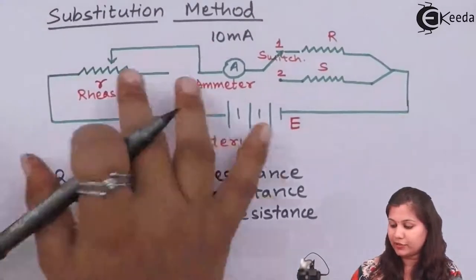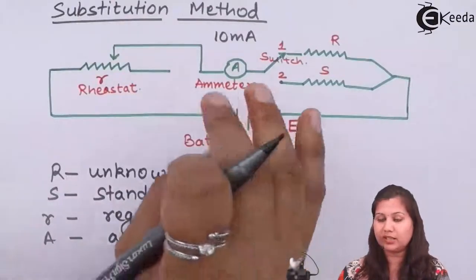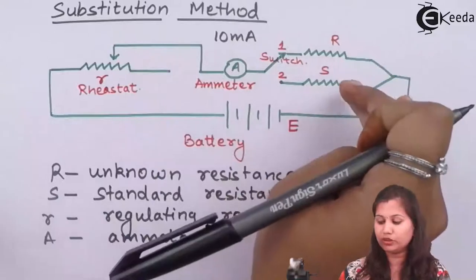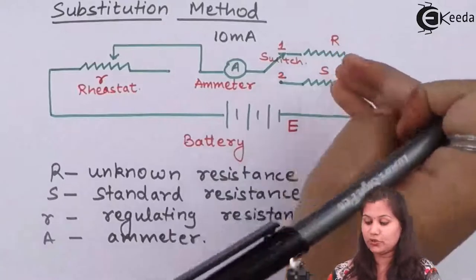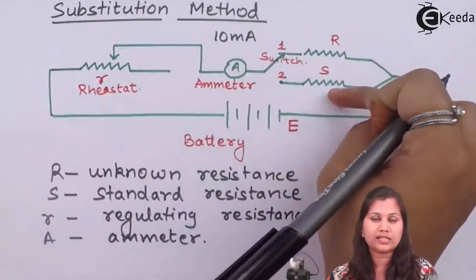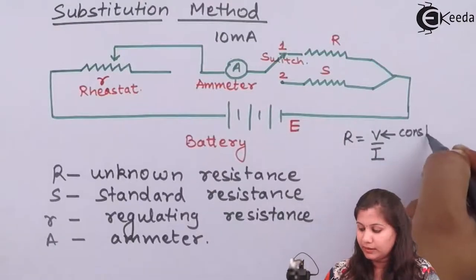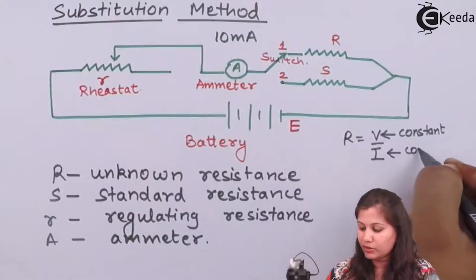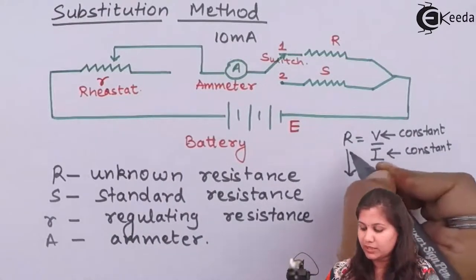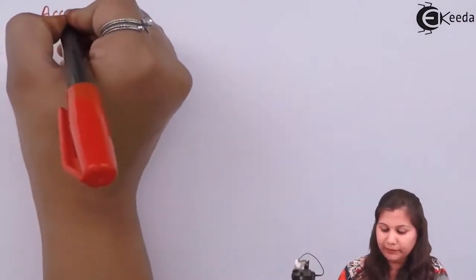The accuracy of this method depends upon the EMF of the battery. In this connection, the battery provides a constant EMF to the circuit. When the EMF is constant and current is constant, only then can we substitute the standard resistance with the unknown resistance and say the two resistances are equal. If there is any change in the EMF, the values of the two resistances will not be equal, because resistance equals V divided by I — we have made V constant and working current constant, only then can we equate and substitute the two resistances. So the accuracy of this method depends upon the EMF of the battery.